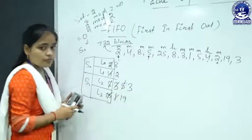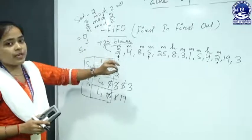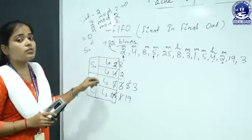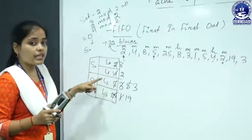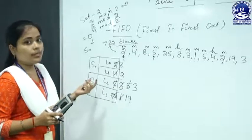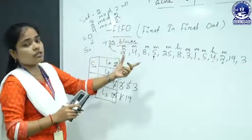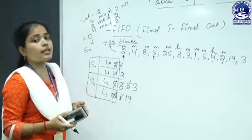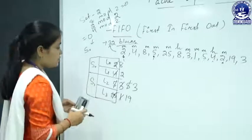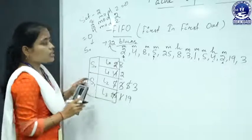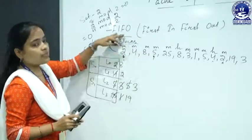This is the concept of FIFO replacement algorithm in the set associative mapping technique. When memory blocks are mapped into cache lines using set associative mapping, the FIFO replacement algorithm is used in this way to replace blocks in the cache memory.